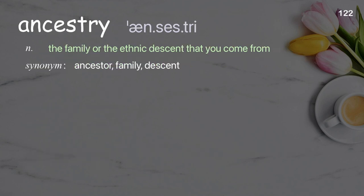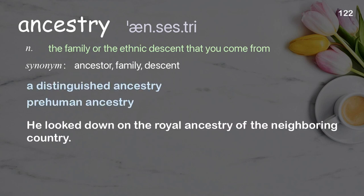Ancestry: the family or ethnic descent that you come from. Examples: a distinguished ancestry, pre-human ancestry. He looked down on the royal ancestry of the neighboring country.